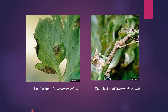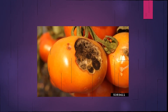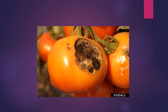Here you can observe the leaf lesions of Alternaria solani on the foliage — first starting with brown color and later turning to black. Here is the stem lesion of Alternaria solani; it can spread from the leaf to the stem as well. On the fruit of tomato, you can observe a sun-scald appearance with concentric rings caused by early blight.